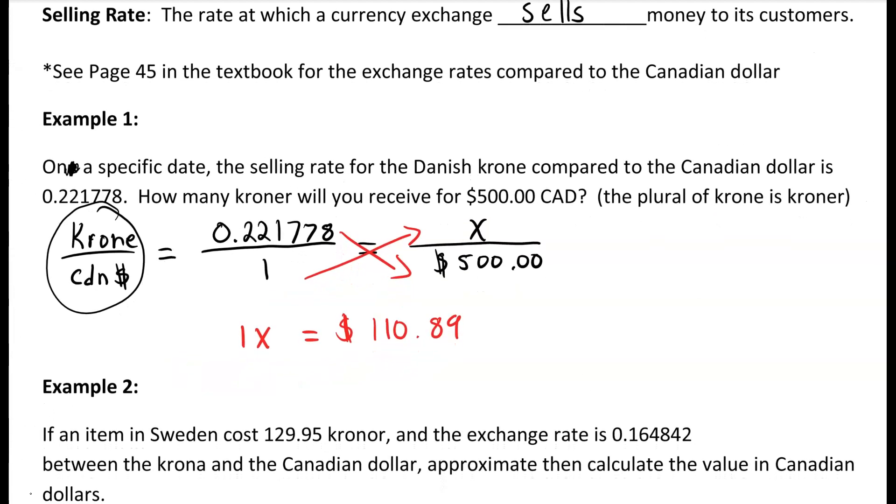So for our answer for exchanging 500 Canadian for the Danish krone, we would end up with $110.89.